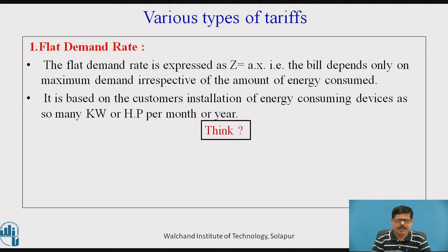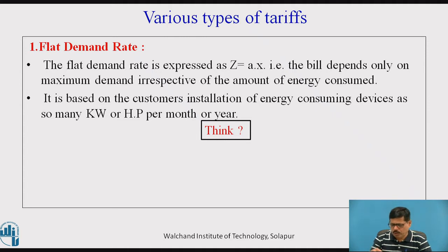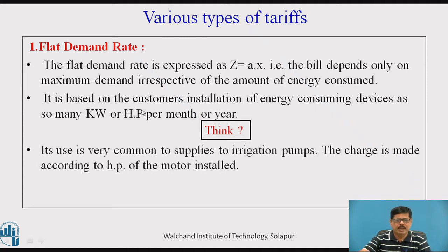Whenever the energy consumption pattern is fixed and not going to vary — particularly in case of street lights, which are typically on from 6 p.m. to 6 a.m. — or for agricultural loads like irrigation pumps, the charging can be made according to the HP of the motor installed. For example, if a motor rating is 10 HP and the charge is 500 rupees per HP, then annually the bill will be 500 × 10 = 5,000 rupees per year.